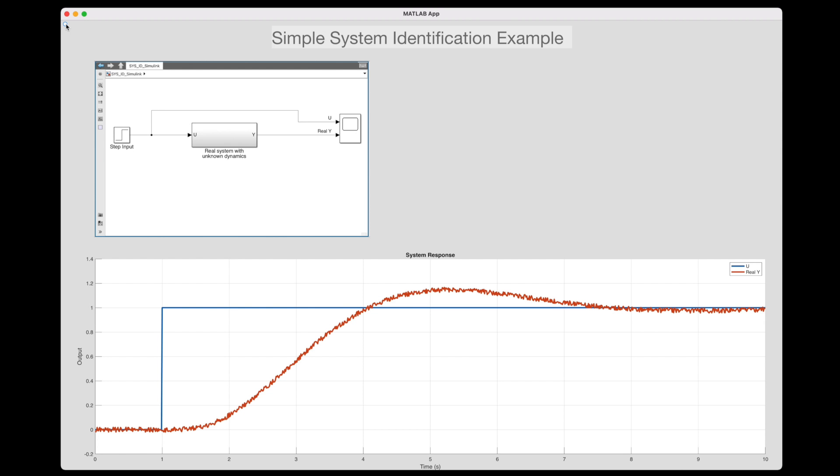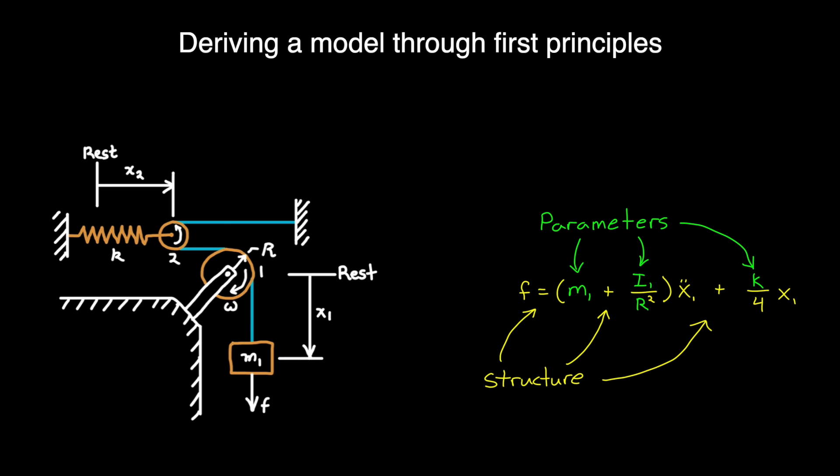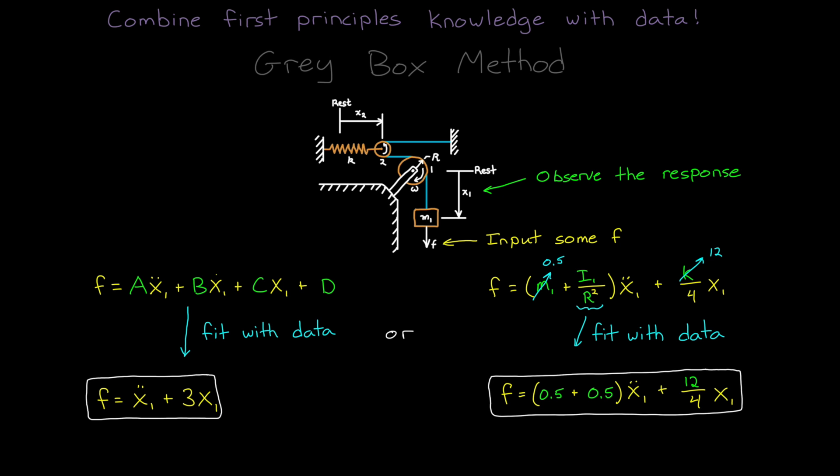And this is the general idea behind all system identification methods. If you have access to good input-output data that captures the behavior of the essential dynamics of your system, you can fit a model of your choice to that data using a numerical estimation technique. And building a model from data like this is a counterpart to deriving a model through first principles. Although the two can be combined to give you the flexibility of picking some model parameters and the power to learn the others.